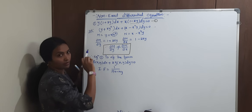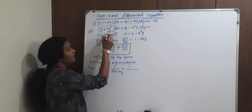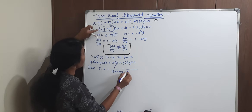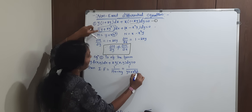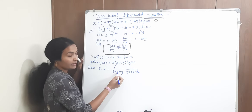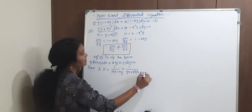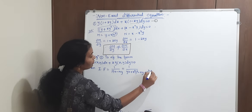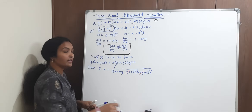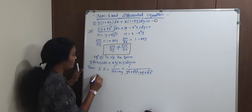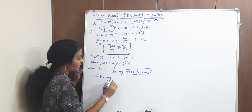From the first term, take y common; from the second term, take x common. What is mx? Multiply m with x. And ny is n multiplied with y. Computing mx: x times (y plus xy²) gives xy plus x²y². Computing ny: y times (x minus x²y) gives xy minus x²y². Therefore mx minus ny equals xy plus x²y² minus (xy minus x²y²), and the xy terms cancel, leaving 2x²y². So our integrating factor is 1 by 2x²y².